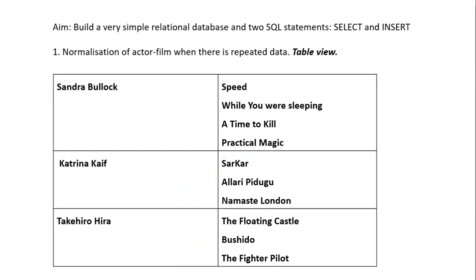Let's look at a simple table where the actor is on the left, and the films that actor appears in are on the right. This is just a simple table of three actors and a few of the films they've appeared in. Sandra Bullock has appeared in Speed, While You Were Sleeping, A Time to Kill, Practical Magic, and many other films. Katrina Kaif has appeared in Sakar,